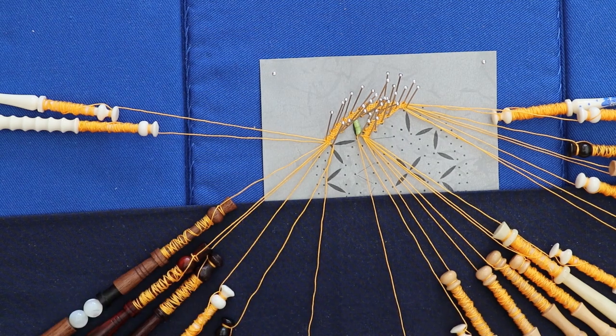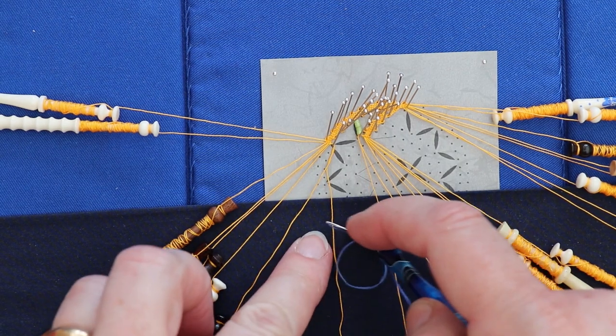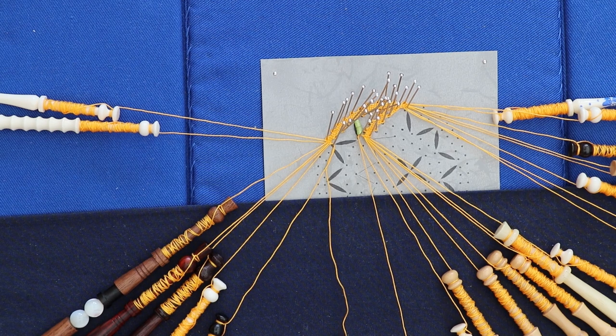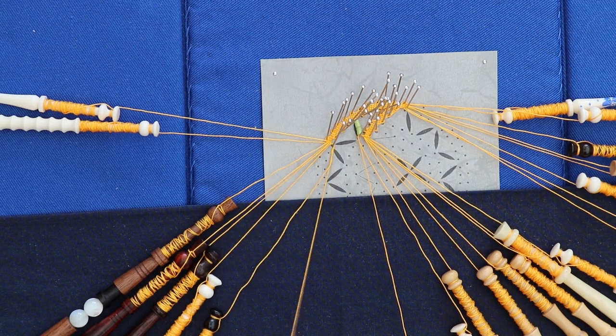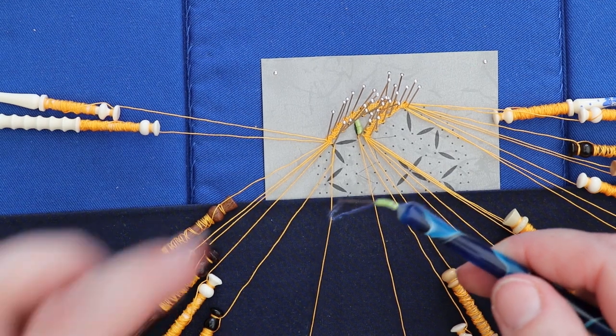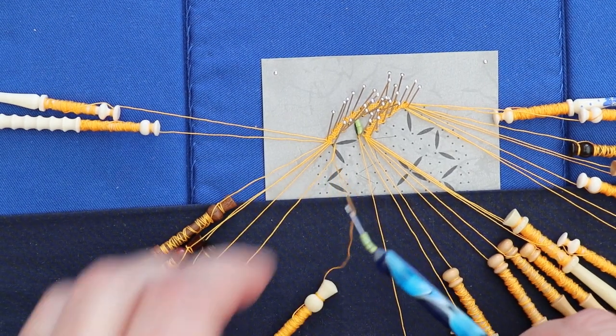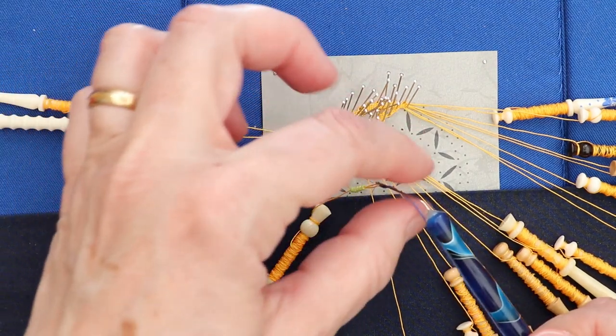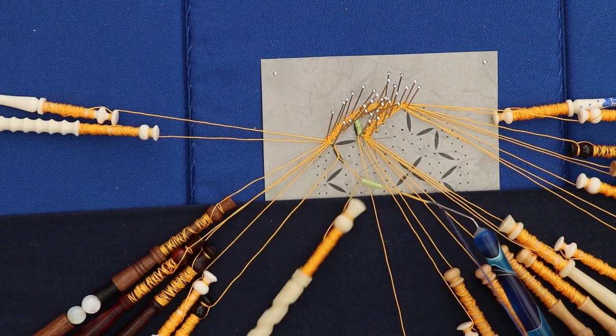Or if you've got them on the crochet hook, you just hook the thread and pull the thread through that way. So onto the bobbin, pull the loop up, get hold of the beads between your finger and thumb and literally push them onto the thread.